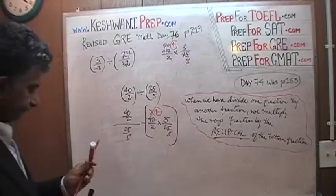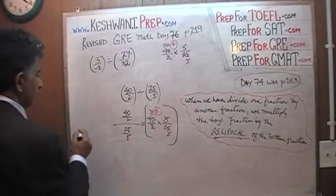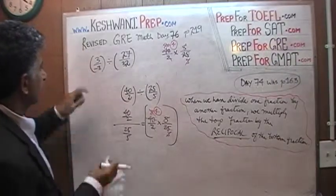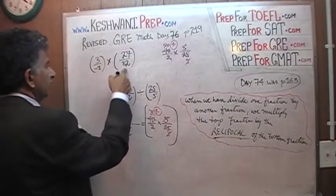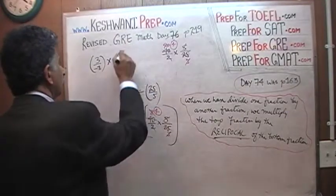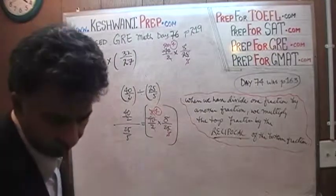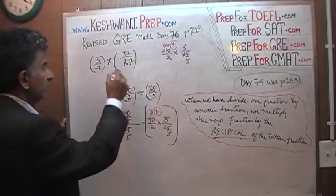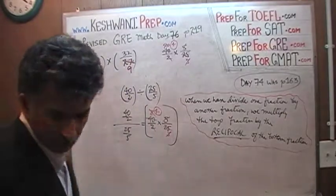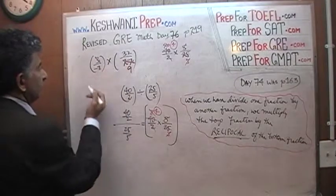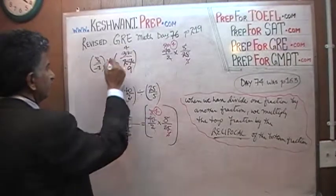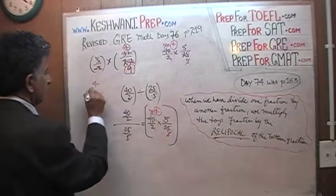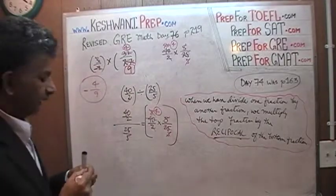We do the exact same thing here. We take our top fraction, 3 over negative 8, and multiply it by the reciprocal of 27 over 32, which is 32 over 27. Now simplify: 3 goes into 27 nine times — that cancels. 8 goes into 32 four times — that cancels. Don't forget the negative sign. On top we are left with 4, on the bottom we are left with 9, with a negative sign. Negative four ninths is our final answer. That was the end of the second problem.